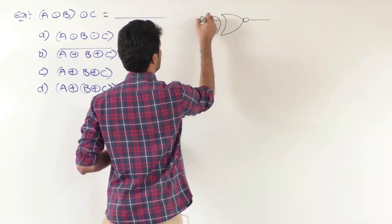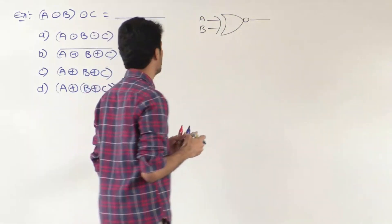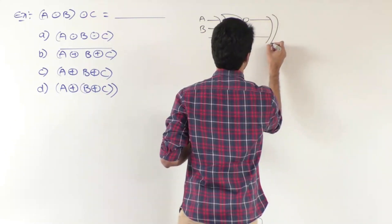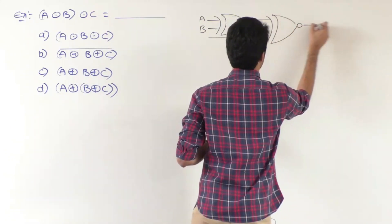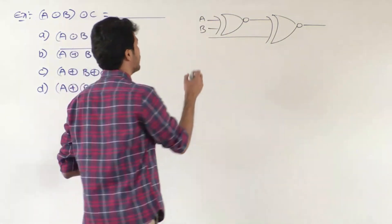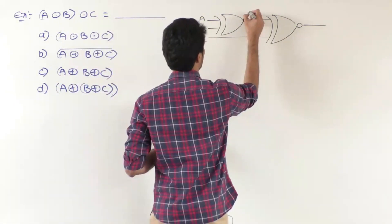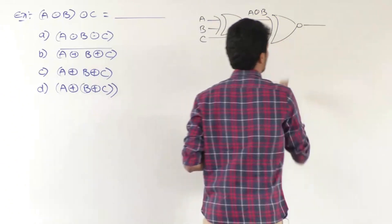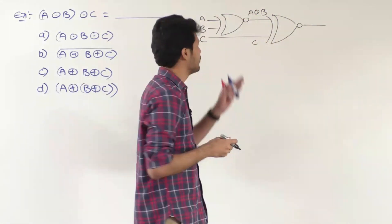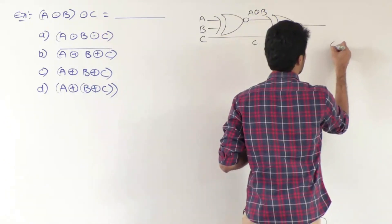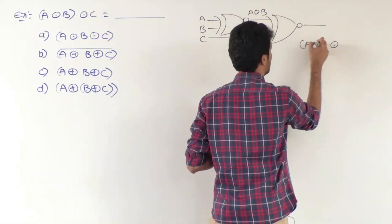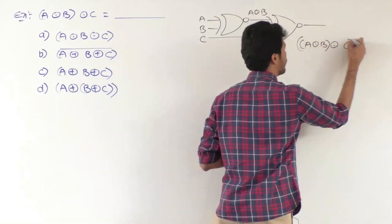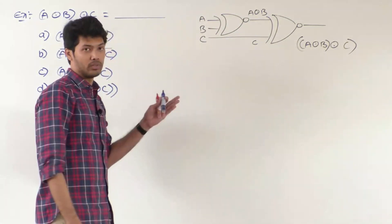Let me call the inputs A and B. The output of this first XNOR gate is given as input to one more element, along with variable C. So we have one more XNOR gate with inputs: one is A XNOR B, and the other is C. This gives us the overall output function A XNOR B XNOR C.